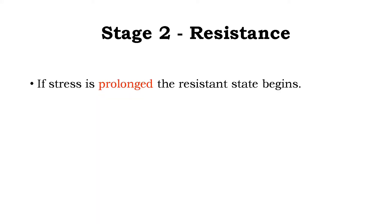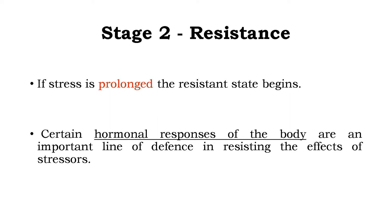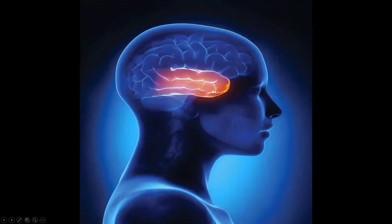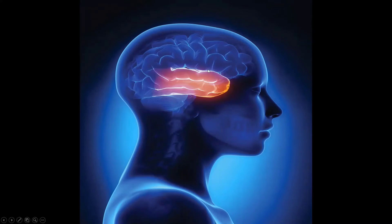In the Stage of Resistance, if stress is prolonged, the resistance state begins. Certain hormonal responses of the body are an important line of defense in resisting the effects of stress — the body releases certain hormones which help us fight stressors. To understand exactly what those hormones are and how they function, we need to look at a diagram. The highlighted area shown is the temporal lobe of our brain, which is just above our ears. It is important to understand the location of the relevant hormones and brain regions.